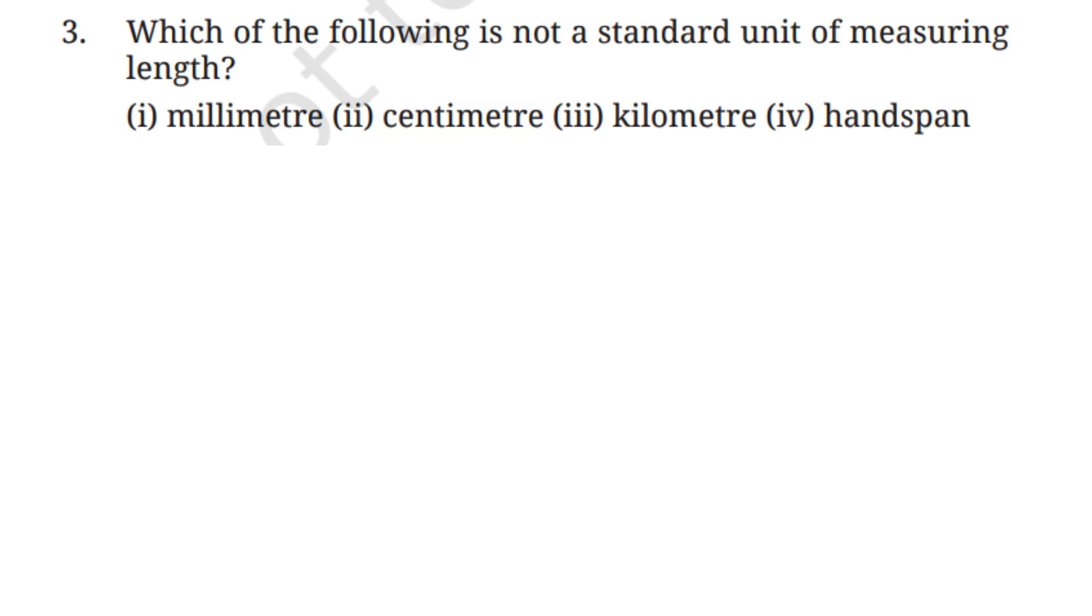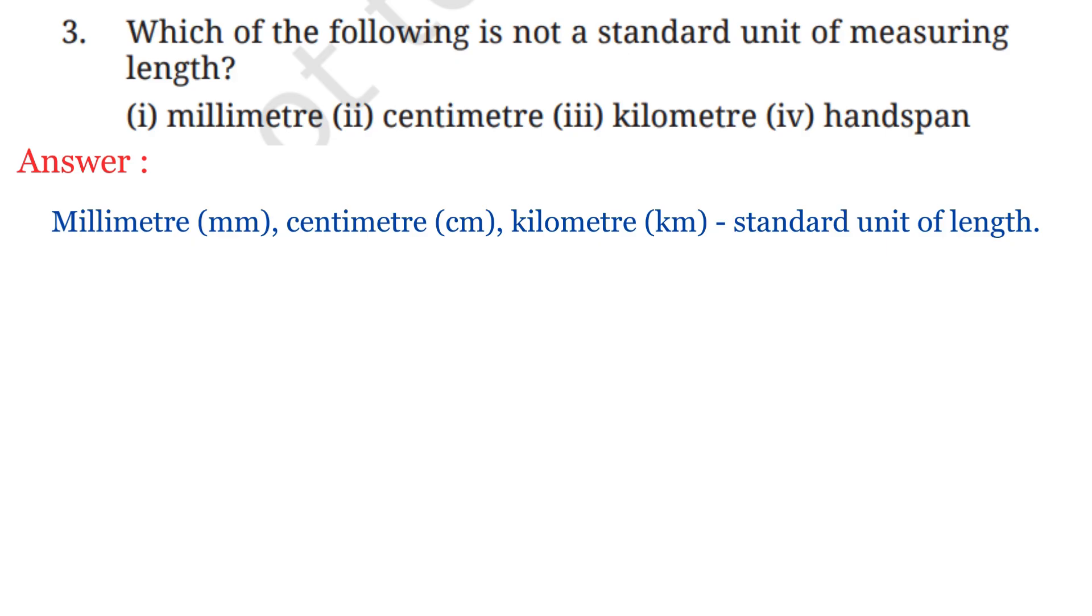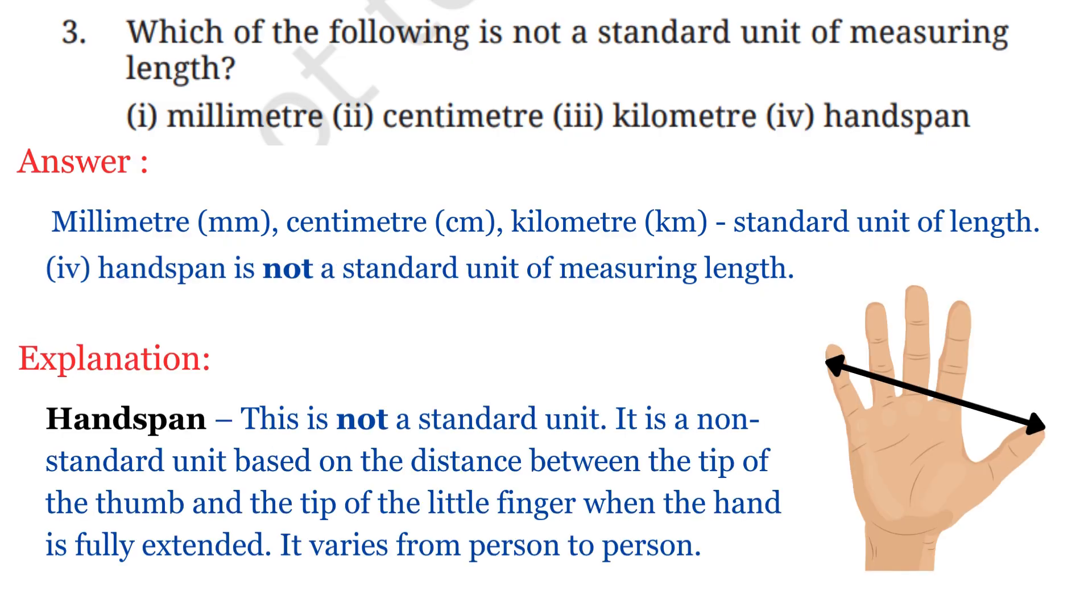Question No. 3: Which of the following is not a standard unit of measuring length? Options are millimeter, centimeter, kilometer, and hand span. So we know millimeter, centimeter, and kilometer are standard units of length. But hand span is not a standard unit of length. It is a non-standard unit based on the distance between the tip of the thumb and the tip of the little finger when the hand is fully extended, and it can vary from person to person. Hence hand span is the correct answer.